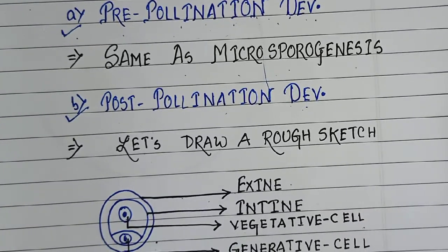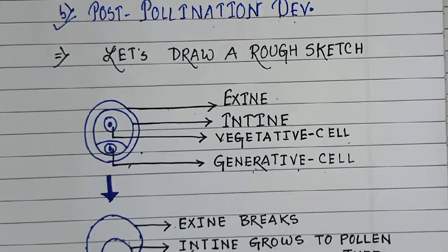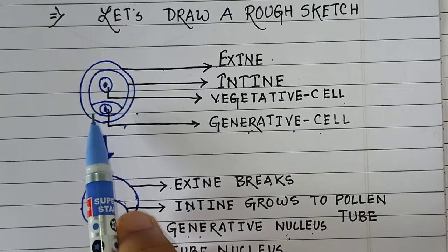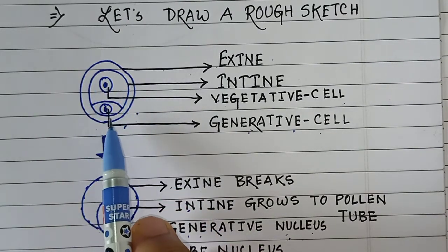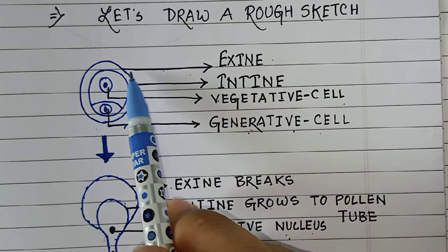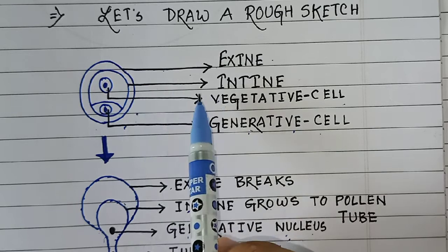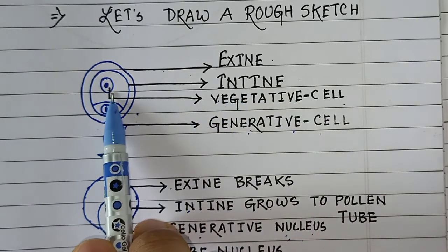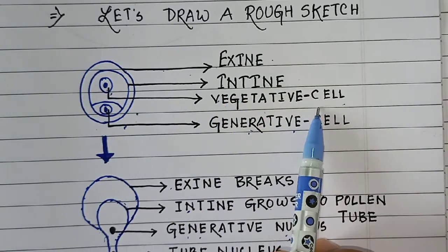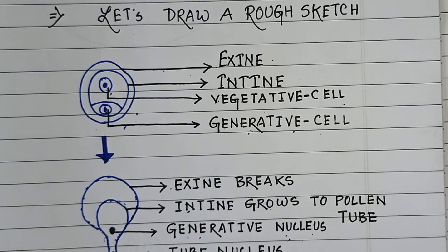Now let's draw a rough sketch and move forward. This diagram is the diagrammatic representation of a pollen grain. The outer layer is the exine, the innermost layer is the intine, the bigger cell is the vegetative cell, and the smaller one is the generative cell.